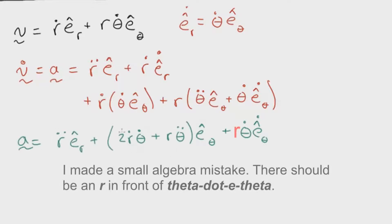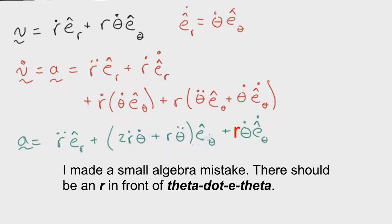Grouping those two terms together, we get r_double_dot times e_r, plus 2*r_dot*theta_dot plus r*theta_double_dot, times the unit vector e_theta. Then there's a last term, which is theta_dot times the time derivative of the unit vector e_theta.